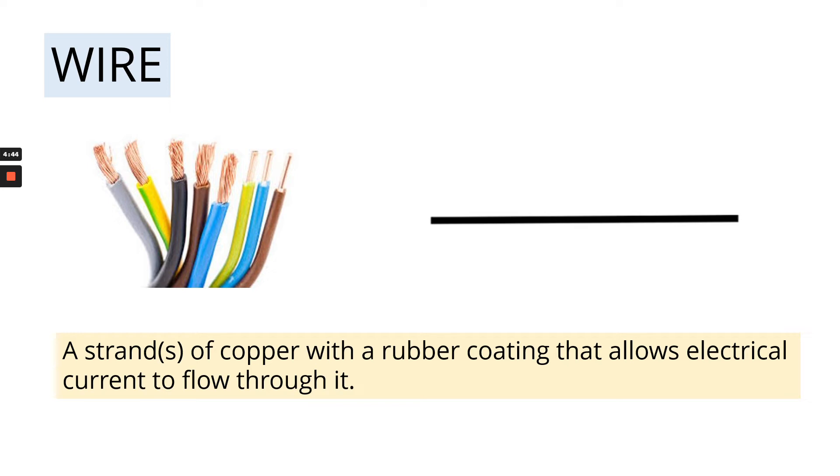So the copper is the part that allows electrical current to flow through it, not the rubber. The rubber is an electrical insulator, so it won't allow electrical current to pass through it. Therefore, if you touch an electrical wire with the rubber around it, you will not get an electric shock.